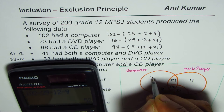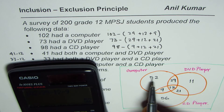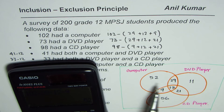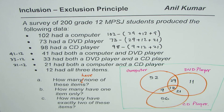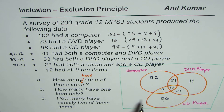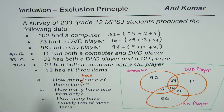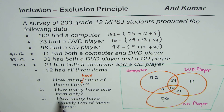So we have 52 in the computer only region. That's how you fill in all the regions of the Venn diagram. Now let's get back to part A of the question: how many have none of these items?